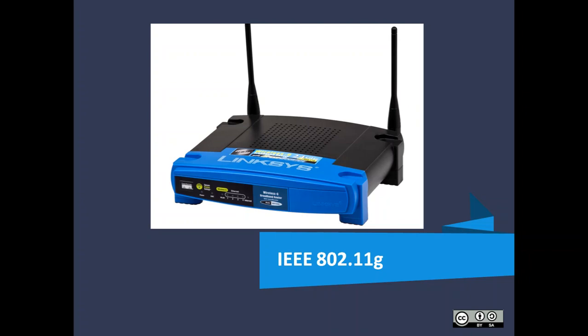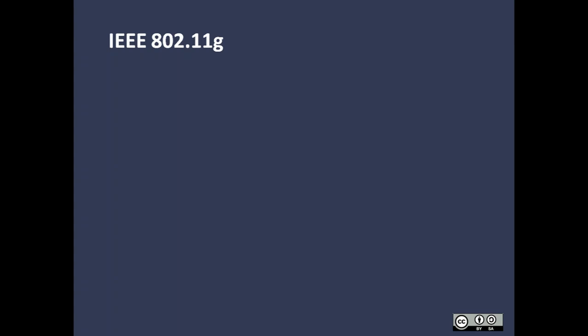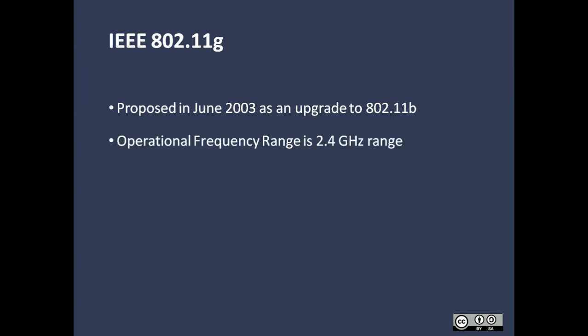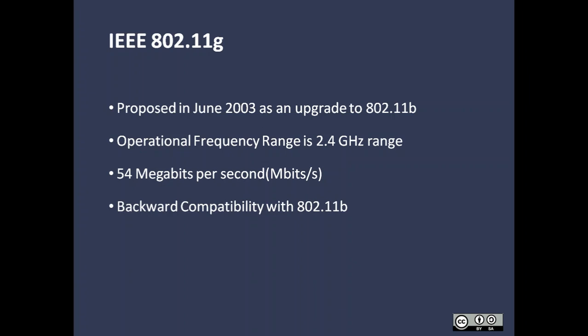Let's move to IEEE 802.11 G. IEEE 802.11 G was the upgraded version of 802.11 B, which was launched in June 2003. Its operating frequency range is 2.4 GHz and it has a speed of 54 Mbps, the same speed as 802.11 A. The access points of 802.11 G were backward compatible with 802.11 B, so it was easy to upgrade your network from B to G. It has similar frequency conflicts as 802.11 B.